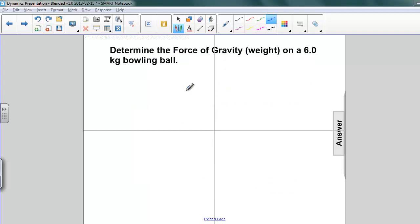Let's do an example. Let's determine the force of gravity or weight on a six kilogram bowling ball. And we're going to assume that because it's a bowling ball, it's likely to be on Earth. So let's write down what we know. We know the mass. The mass is six kilograms. And we know the acceleration due to gravity, g, which is 9.8 meters per second squared.